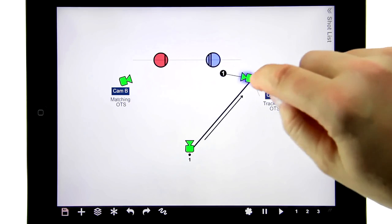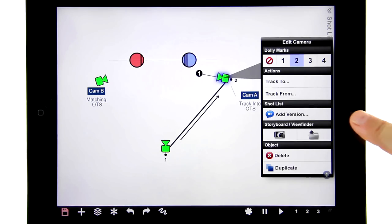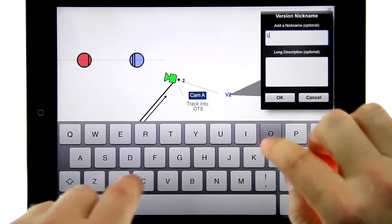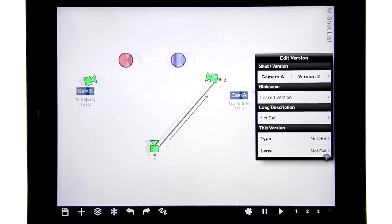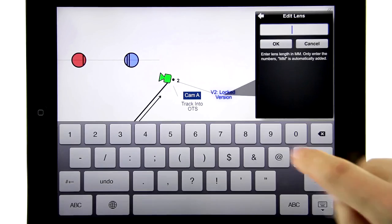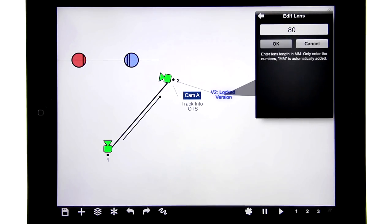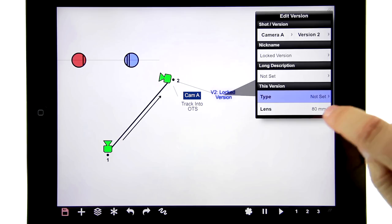So in Shot Designer you can add more than one shot description to a shot and then it just becomes another version. I'm going to add one here and I'm going to call it 'locked version', and then let's add some shot data for it. I'm going to say this is an 80 millimeter and the type is also an over-the-shoulder.